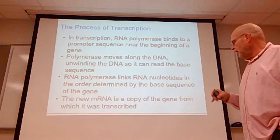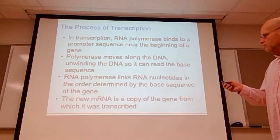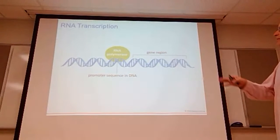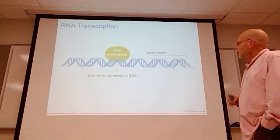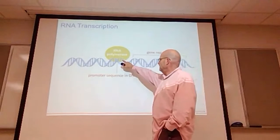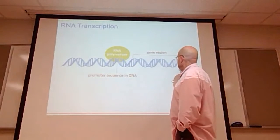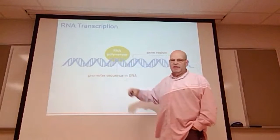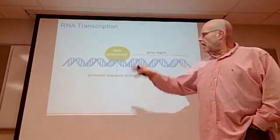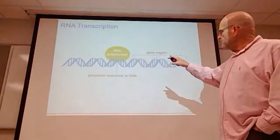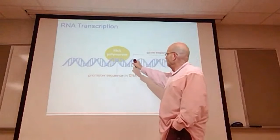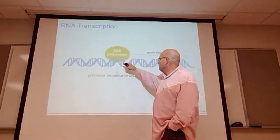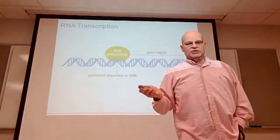The new messenger RNA is a copy of the gene from which it was transcribed. Here the RNA polymerase is binding at the gene region; the promoter region is a little bit in front of the gene and allows the process to start. All of the excess in a subsequent step will be removed, leaving just the gene.